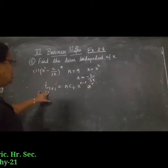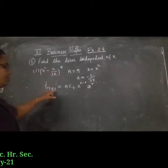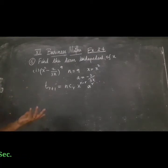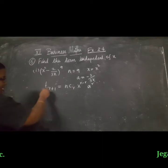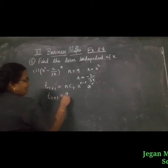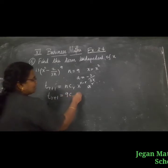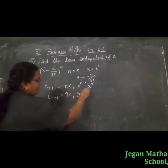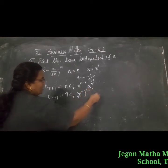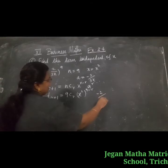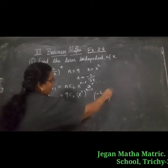Let us substitute. t(r+1) — we don't know r, so you have to keep r as it is. t(r+1) is equal to nCr, x is x squared to the power n minus r, and a is minus 2 by 3x, the whole power r.